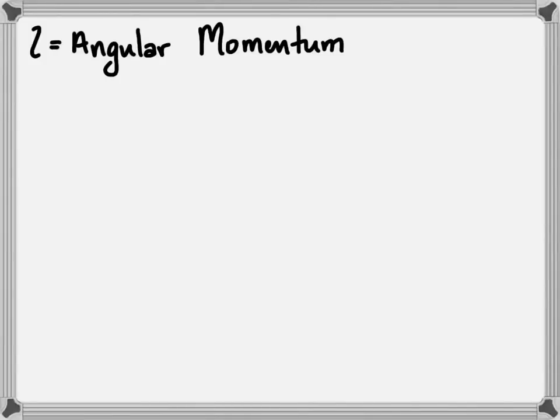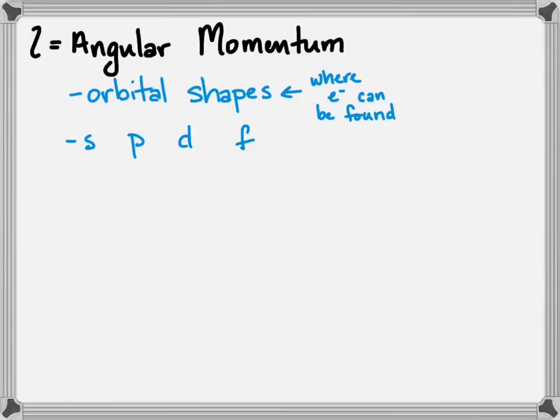This cursive l, or lambda, stands for angular momentum. That's looking at the shape of the orbitals in these energy levels. The orbital shapes are called s, p, d, and f, and those describe the locations where you're most likely to find the electrons.